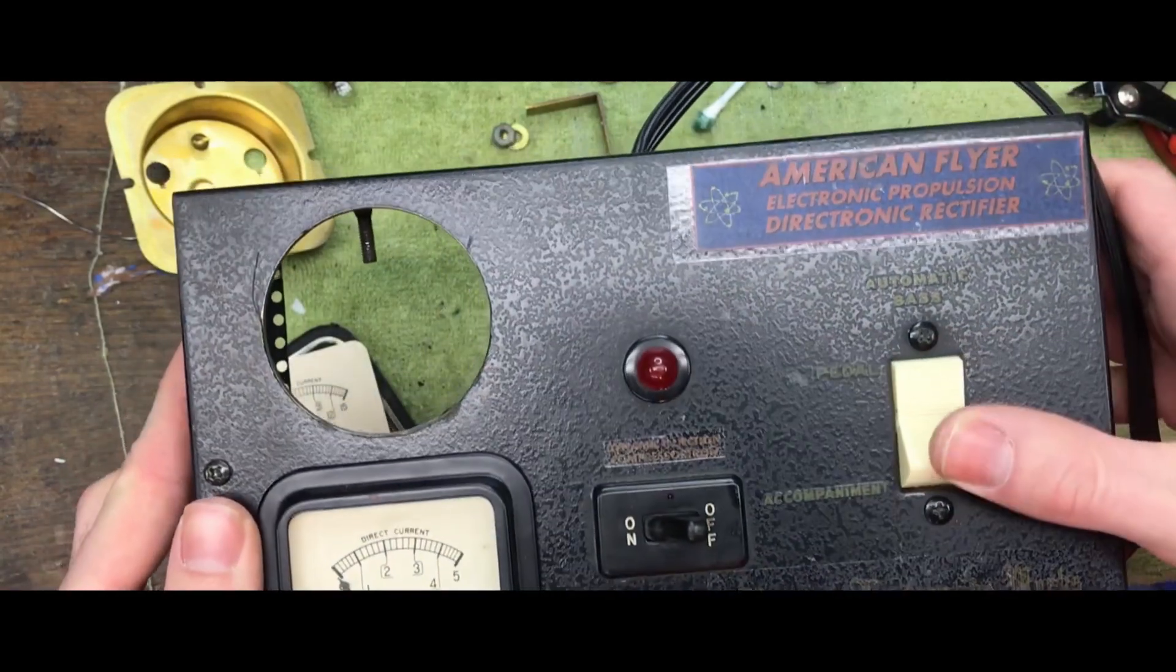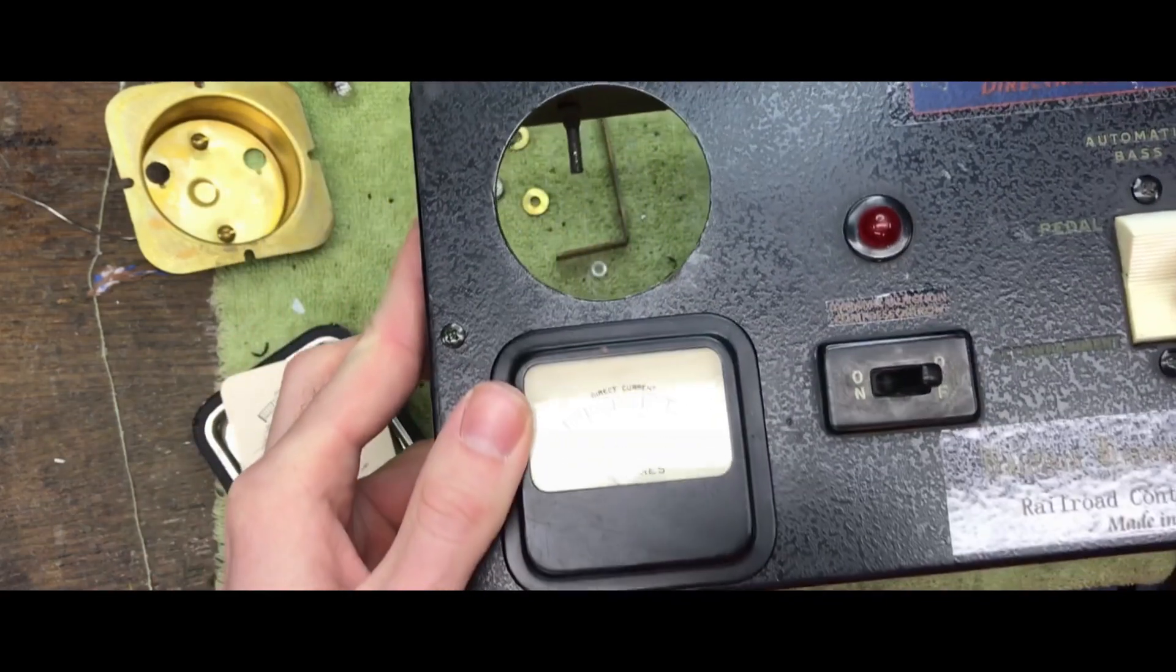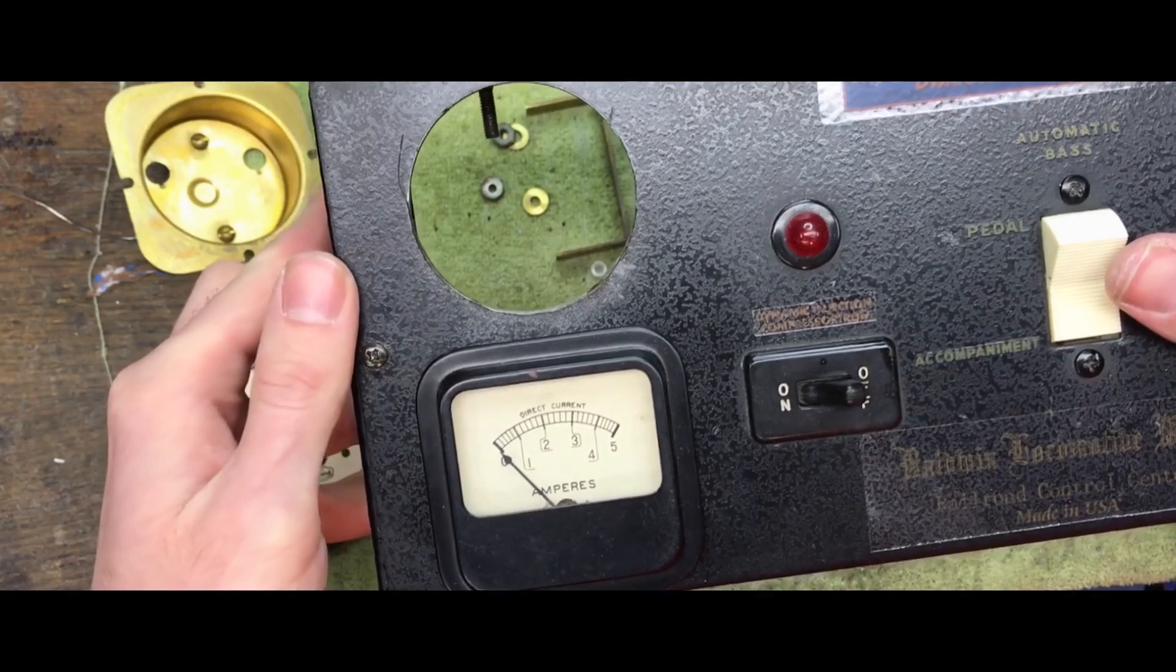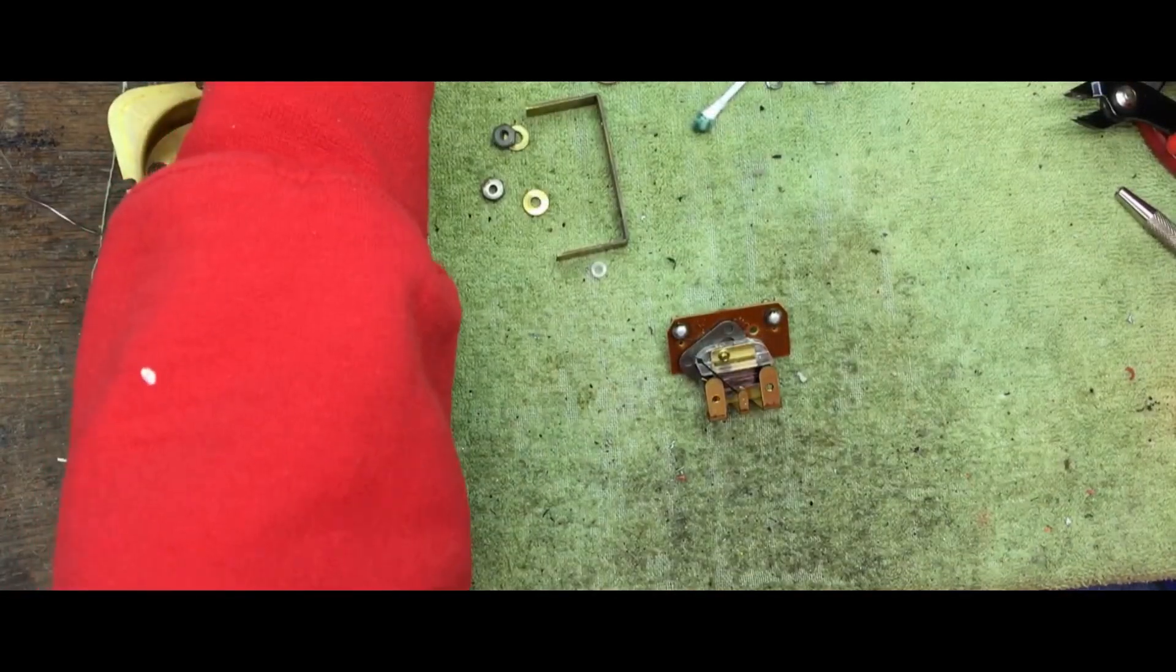So this will be the directional control and then I will also have amperage and voltage. As you can see the voltage meter is not there, it is here.